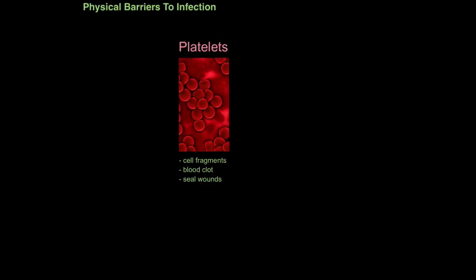In our blood, we have mashed up cell fragments called platelets, very tiny. And what happens is when you're cut, these platelets will form a mesh. These cell fragments will clump together and form a blood clot, and this seals the wound very quickly, preventing any further infection.